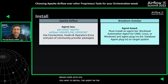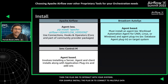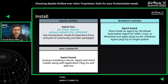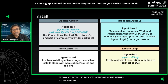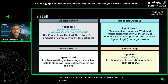For Broadcom Autosys, it is agent-based — you must install an agent on your target machines, for example the Workload Automation Agent for Unix. You also install agent plugins to interact with target systems, such as a database agent plugin for connecting to multiple database types. BMC Control-M is also agent-based: it involves installing a server agent and clients along with application plugins and add-ons. Spotify's Luigi, like Apache Airflow, is agentless — you install it with 'pip install luigi' and create physical connections in Python to connect to your databases.